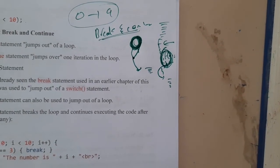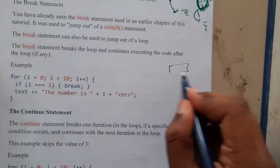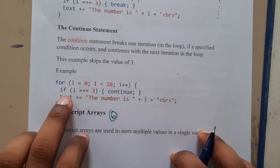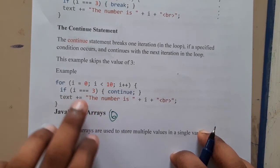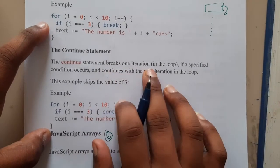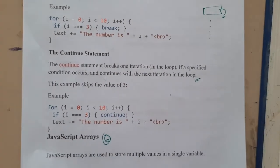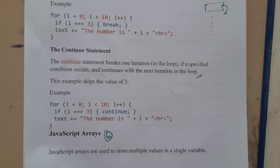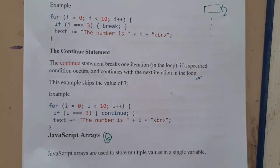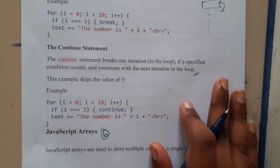Continue is the opposite of break — instead of exiting the loop, it skips the current iteration and continues with the next one. For example, with 'i = 0', 'i < 10', 'i++' — at i equals 3 you write continue, so instead of breaking the loop it skips that iteration and moves to the next. The continue statement breaks one iteration when a specified condition occurs, then continues with the next iteration. I hope everyone got a basic idea about loops, break, and continue. In the next lecture we will start with arrays in JavaScript — see you there!